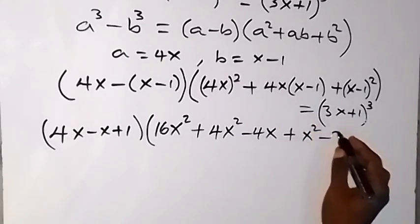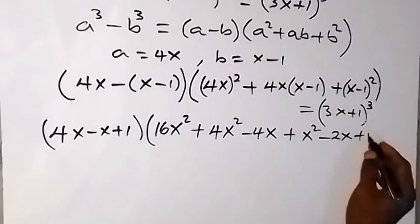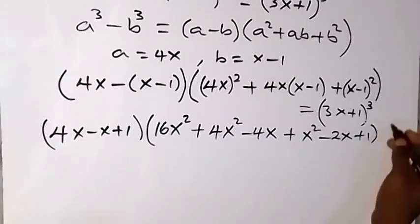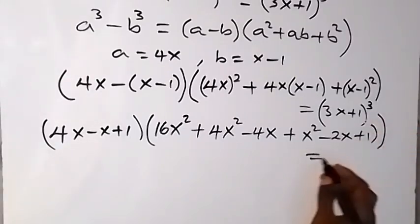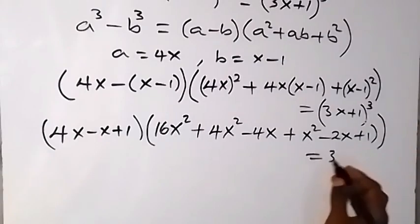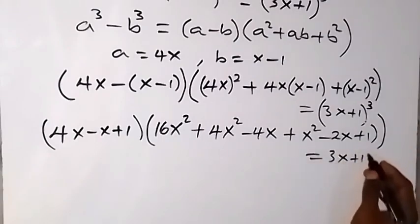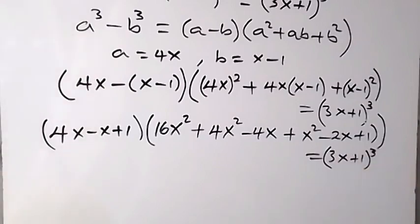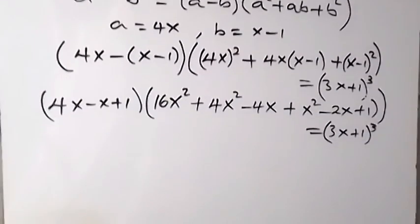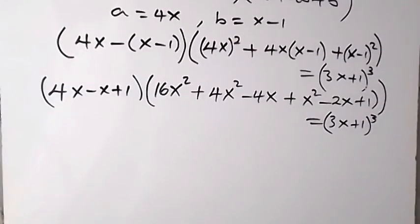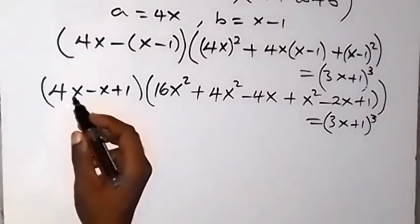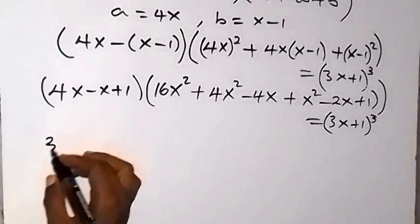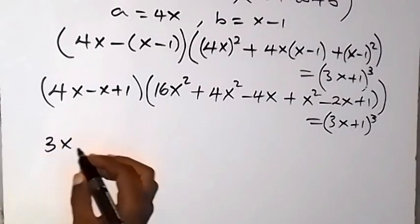Then minus 2x plus 1, which equals the right-hand side (3x+1)³. Reducing the left side: 4x minus x gives 3x, so the first bracket simplifies to (3x+1).